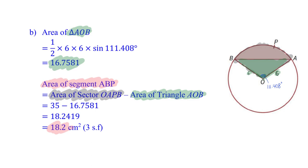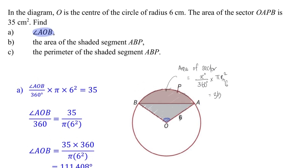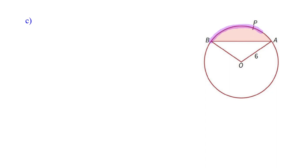And now, let's move on to the last part of this problem where we are looking at the perimeter now of the shaded segment. So from here, then we must first find what is the length AB.